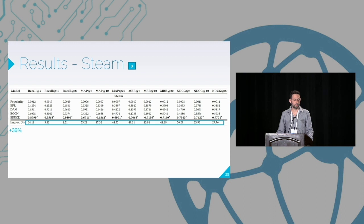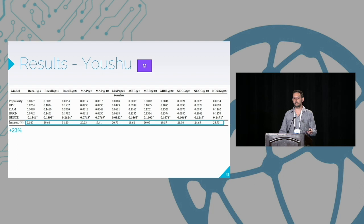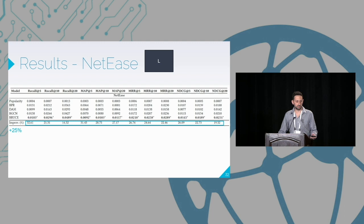For results on the STEAM dataset, across all matrices we see very high differences — on average 36% improvement over all metrics. Most importantly, at K=5, which is a much more difficult task than recall at 20 or 40, we get tremendous differences. We see the same trend on the larger Yushu dataset with 23% improvement on average, and 25% on Netis across all metrics. Further details about which architecture achieves which results are in the paper.